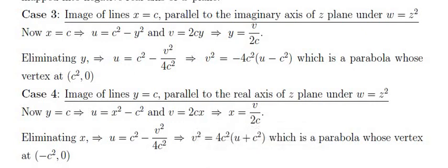Case 4: Image of the line y = c (parallel to the real axis) under w = z². Substituting y = c gives u = x² − c² and v = 2cx. Eliminating x by setting x = v/(2c) and substituting, we get v² = 4c²(u + c²), which is a parabola with vertex at (−c², 0).